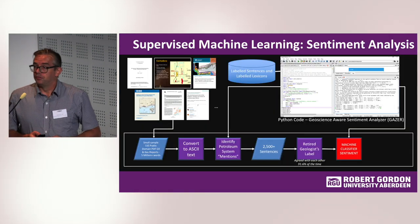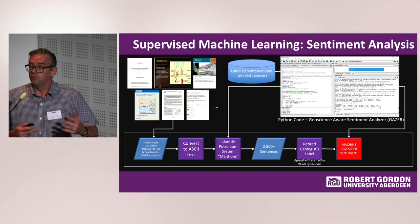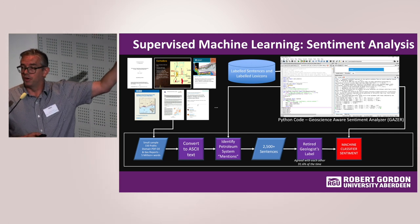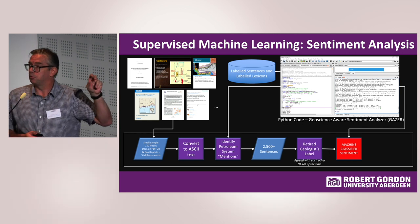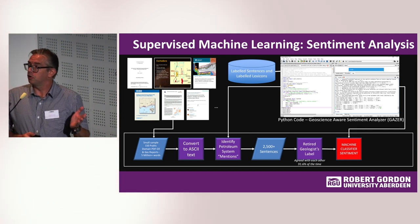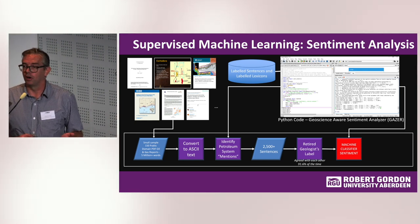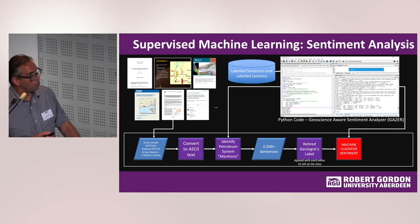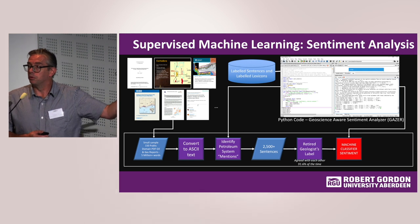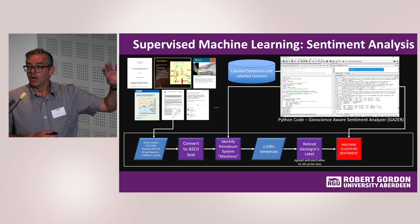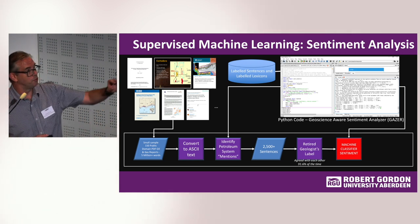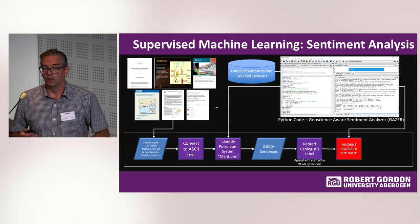The last example is supervised machine learning. I purposely sampled public domain petroleum system reports and extracted sentences containing a petroleum system element — trap, source rock, seal, reservoir, etc. — generating several thousand sentences. I then provided those to retired geologists to label from an exploration geoscientist perspective as positive, negative, or neutral. Interestingly, there was over 90% agreement among the retired geologists — which was unusual, because geologists are not the most agreeable of people. But it's not 100%, and whenever comparing against a human standard, people won't fully agree with each other.